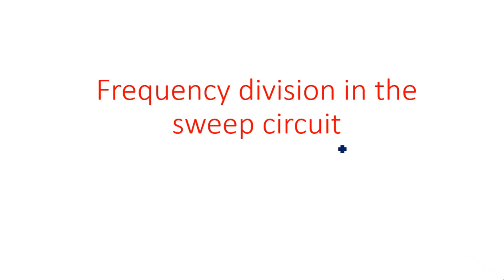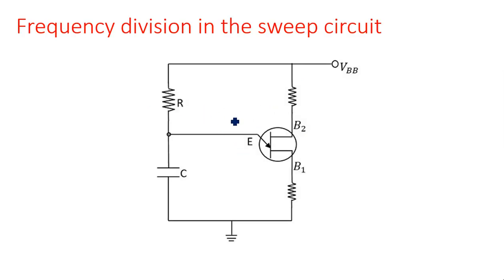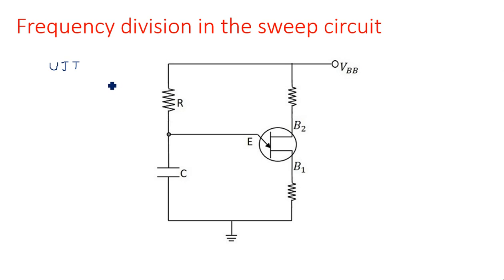In this video I am going to explain about frequency division in the sweep circuit. A sweep circuit is nothing but a sawtooth waveform generator, which is a relaxation oscillator. As an example we are taking a UJT relaxation oscillator. In a UJT relaxation oscillator, a capacitor charges for some duration and again discharges. The discharging of the capacitor decides the frequency of oscillations, hence it is called a relaxation oscillator.